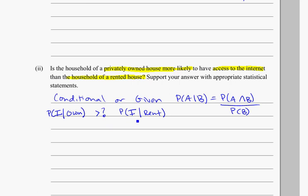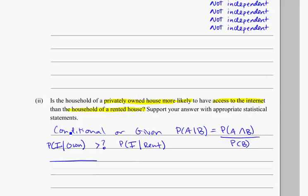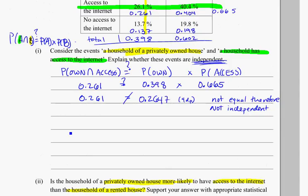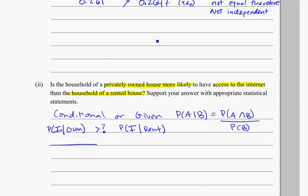The probability, again, using this formula, on this side, the probability that you own your house, what we saw from the table above, the probability that they own their house is 0.398. So 0.398, that's the probability that they own the house.